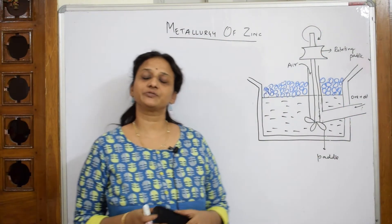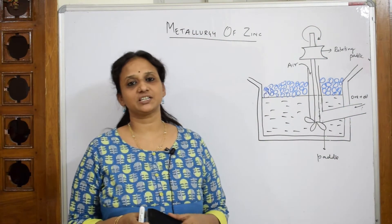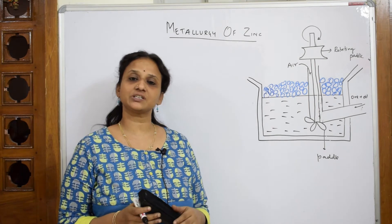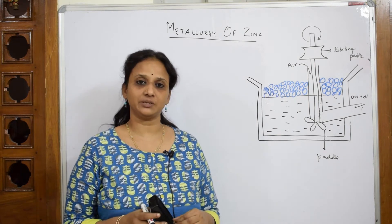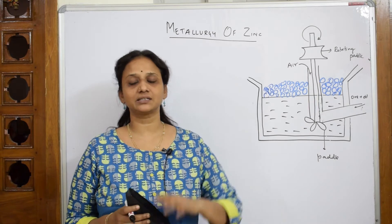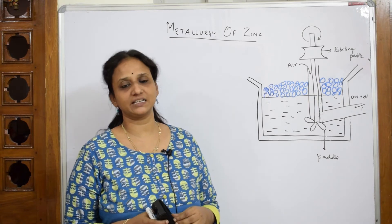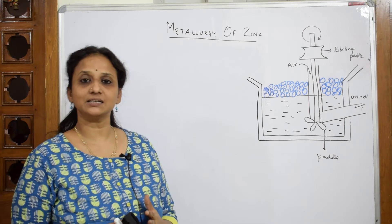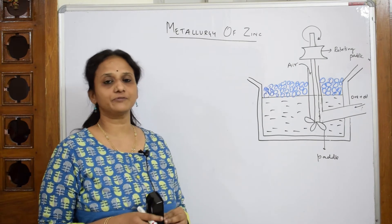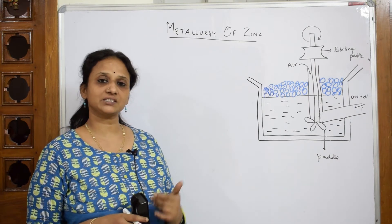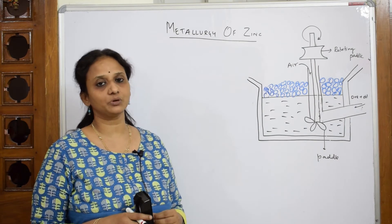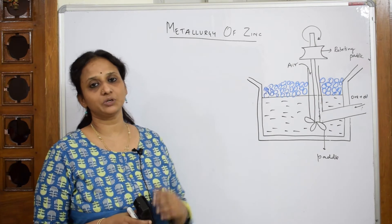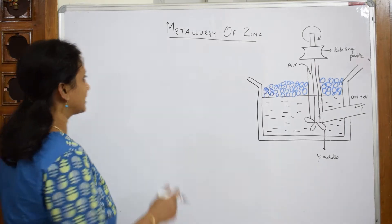Welcome back to one more session of your metallurgy chapter. So till now we have learned the extractions of iron, then we proceeded to the extraction of aluminum. Now let us come back and discuss the complete detailing of zinc extraction. Whenever we speak about zinc, you have to first think about the extraction of the metal from the ore, which is an economical way of extracting metal from an ore.